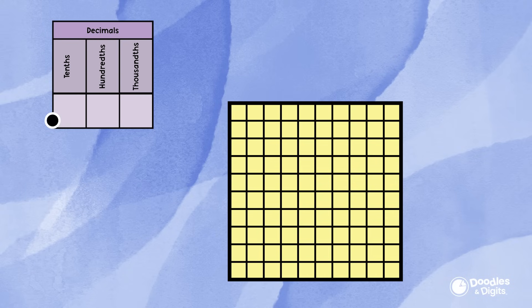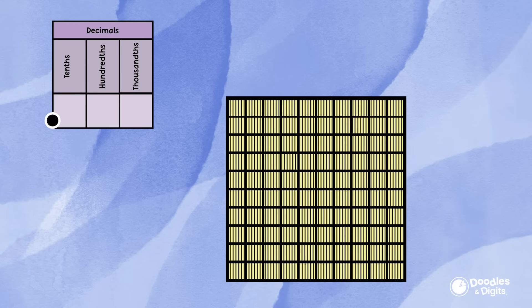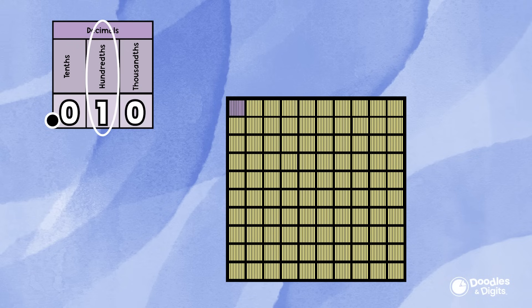We're now going to take those hundredths and divide by ten again — each piece is going to be divided into ten. So that same whole is now divided into thousandths. We can count by thousandths: one thousandth, two thousandths, three thousandths, four thousandths, and so on. What do you notice happens when we get to ten thousandths? That's right — it's the same as one tenth.